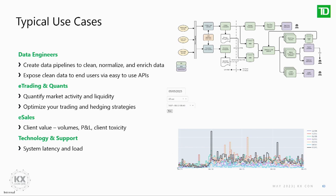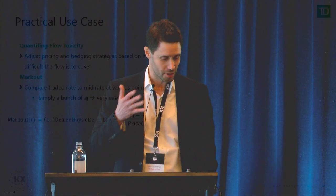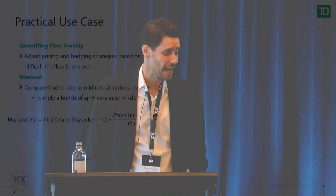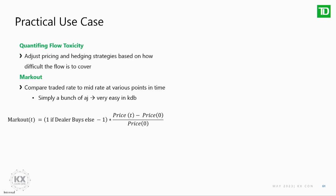One practical use case at the core of a lot of our business decisions: in over-the-counter markets where you show different prices to different customers, you want to assess the toxicity of client flow. A simple way to do this is price impact. Basically we adjust our pricing and hedging strategies based on how toxic the flow is expected to be. The number one thing we look at is what we call mark-out — comparing the traded rate to the mid rate at various points in time. The traded rate is the price at zero, and price-t is the midpoint at some point in time. At the end of the day it's just an as-of join with a bunch of times.